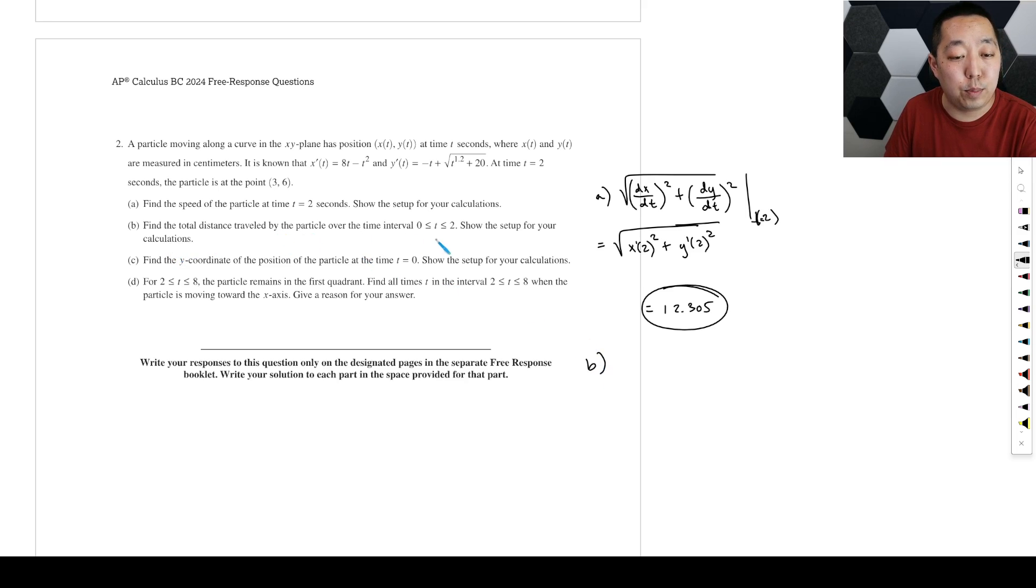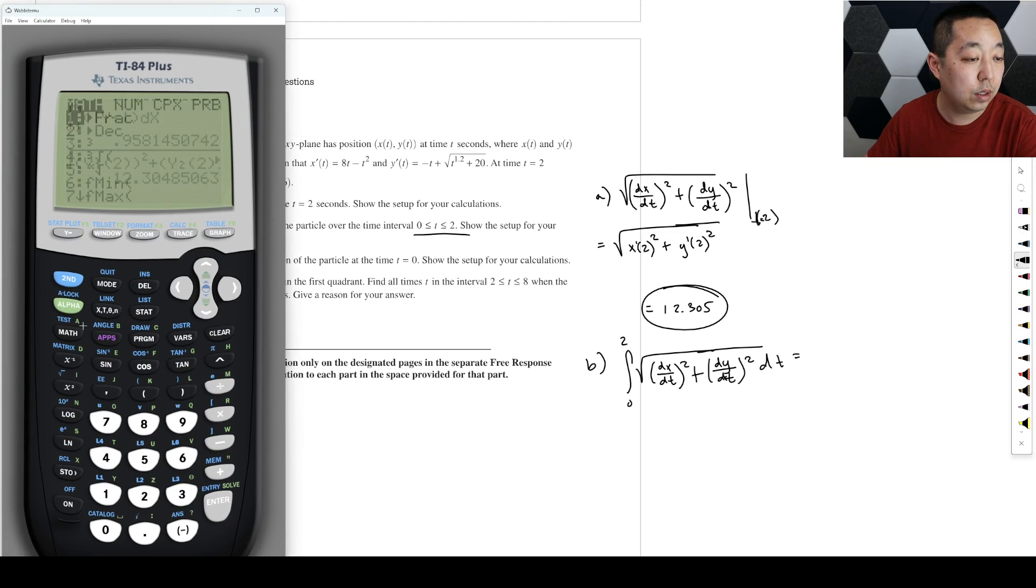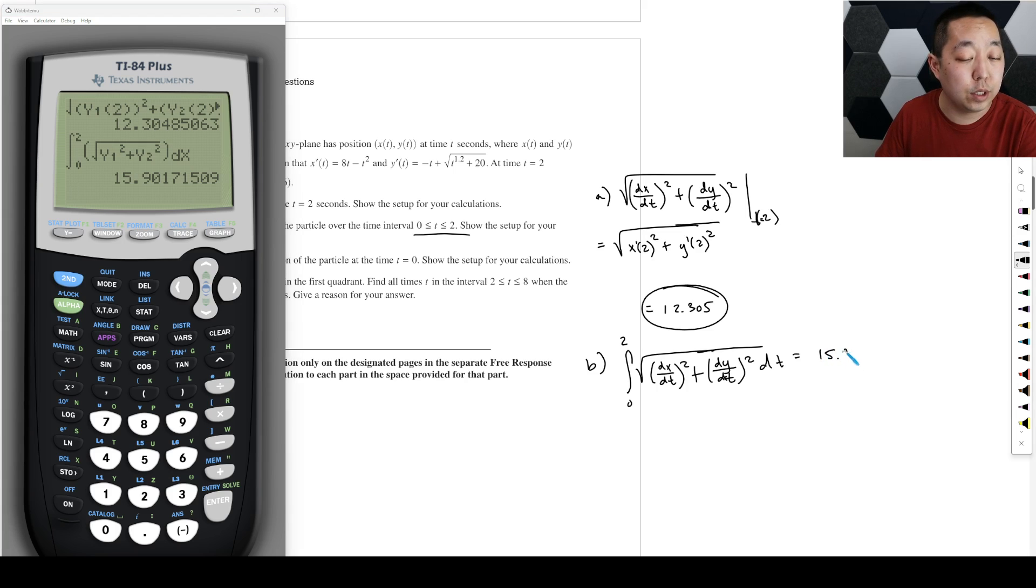Find the total distance traveled by the particle from zero to two. So that's the integral from zero to two of the speed. So now we're not evaluating at a point, we're going to integrate this thing. So this is the speed and we want to integrate it over that. And so that's what we're going to do: math, integrate from zero to two. That's what distance traveled is, right? It's the integral of the speed, square root of y variables function y1 squared plus y variables function y2 squared, and then integrate that over x. And then get 15.902.